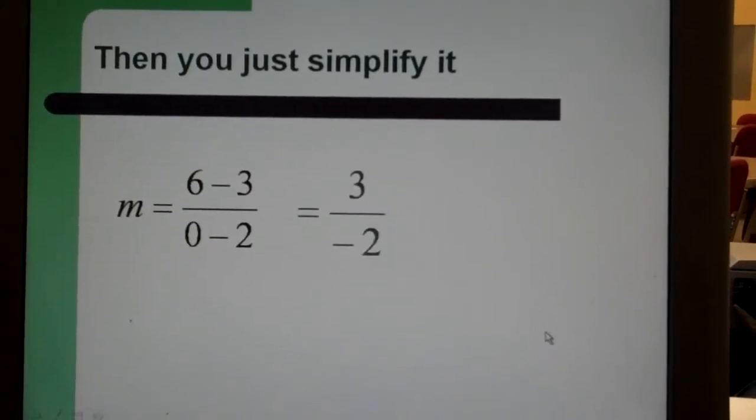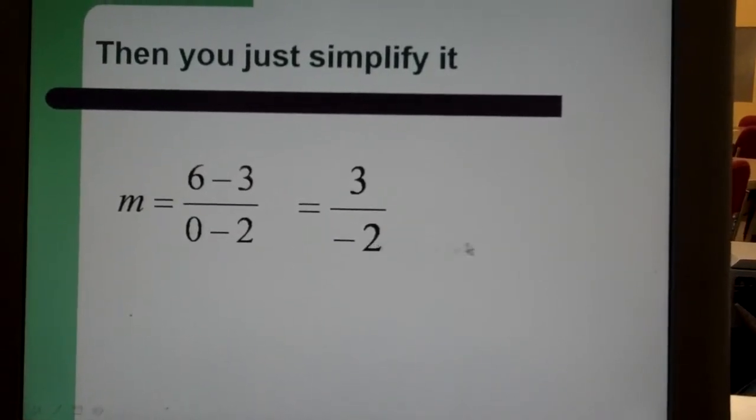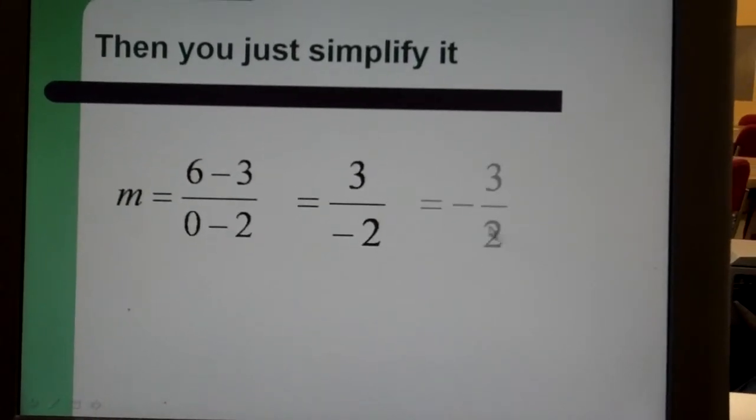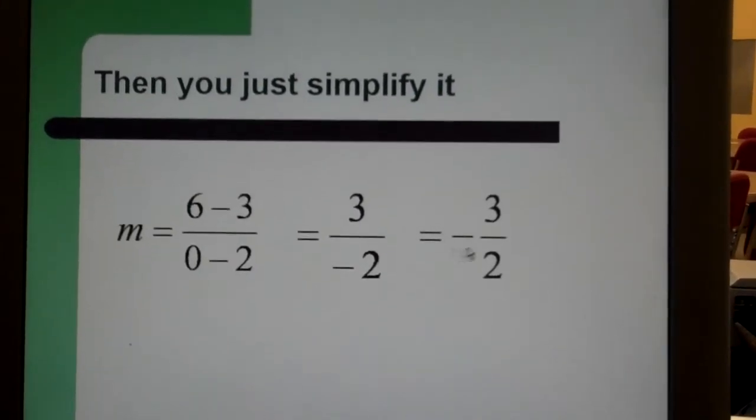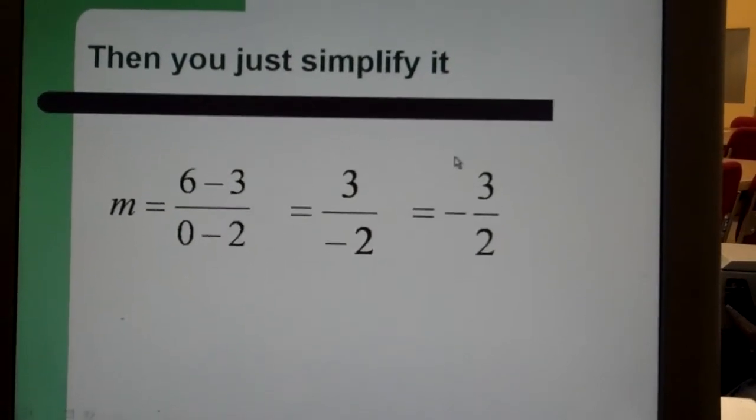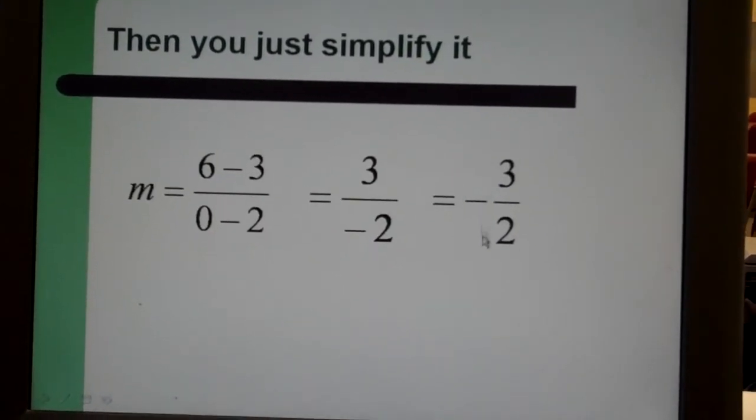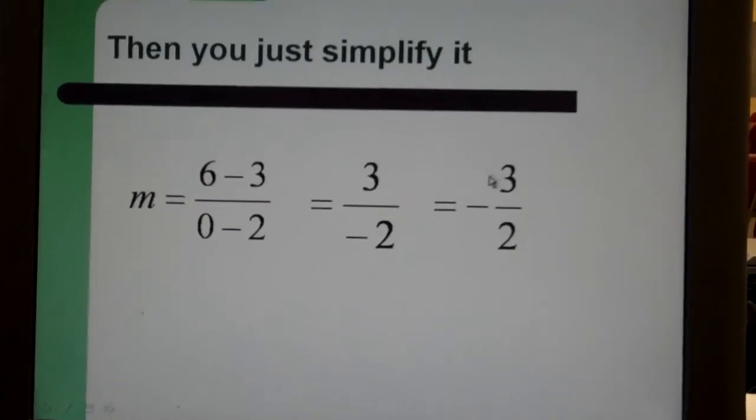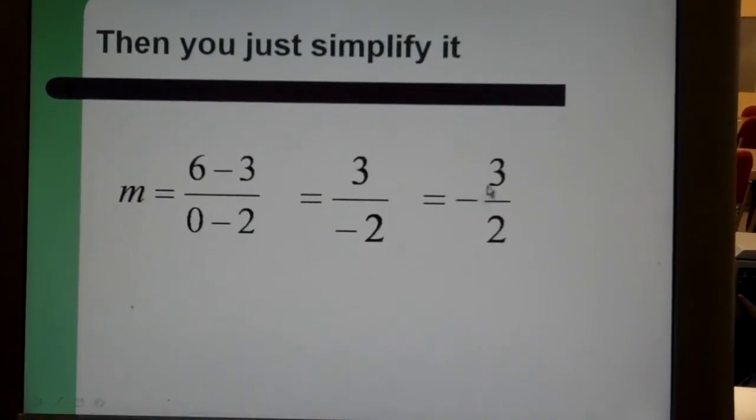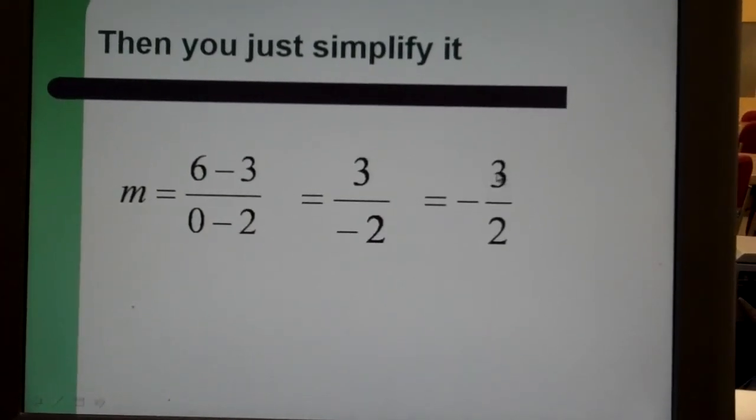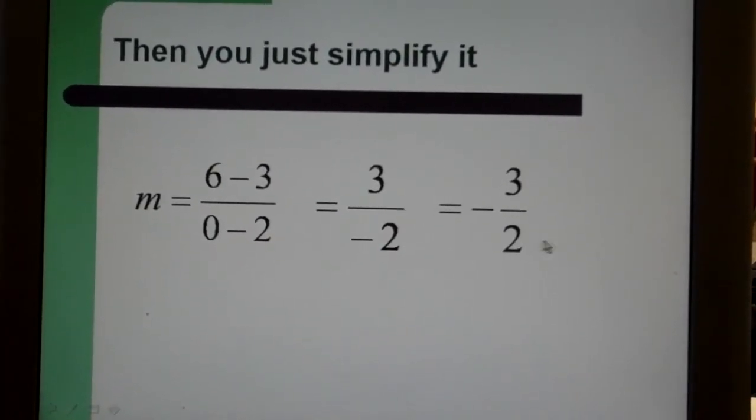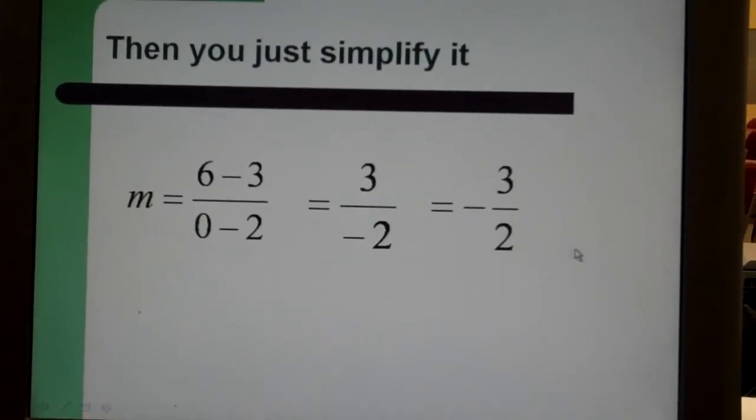And then as we simplify it, we find three over negative two. And since it's a slope ratio, we pull that negative sign out front. Again, negative determines up or down. So this case, it's negative. It's going down. Sign determines up or down. The rise is three. So it's going down three and then over two. Always from left to right. Thank you. Please rewind and watch again.